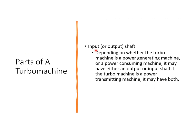The third part is the input or output shaft, depending on what the shaft is doing. If the turbo machine is power-generating, it has an output shaft; if it is power-consuming, it has an input shaft. A power-transmitting machine has both an input and output shaft. So we have power-generating, power-consuming, and power-transmitting machines.